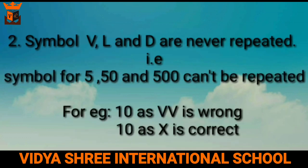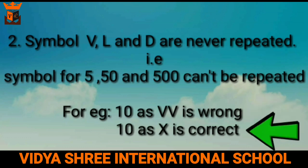The second point: symbols V, L, and D are never repeated. That is, the symbols for 5, 50, and 500 cannot be repeated. This means we do not write the number 10 by repeating V two times. We can write the number 10 as X.